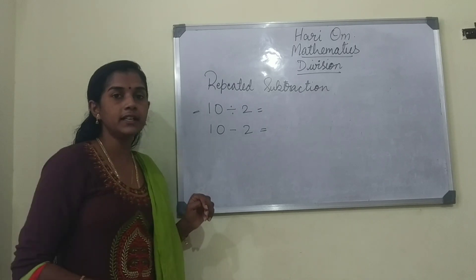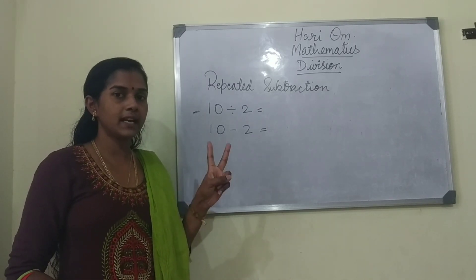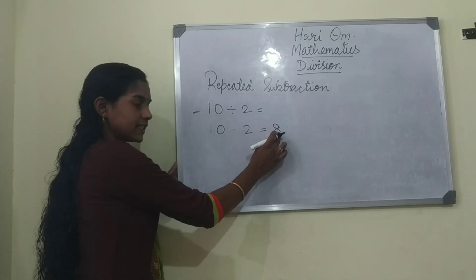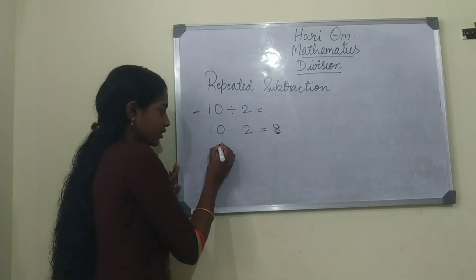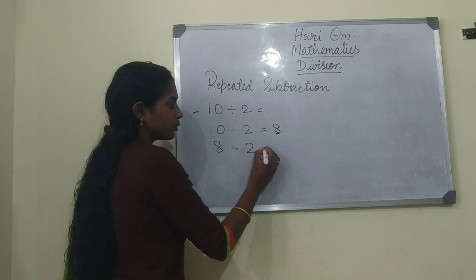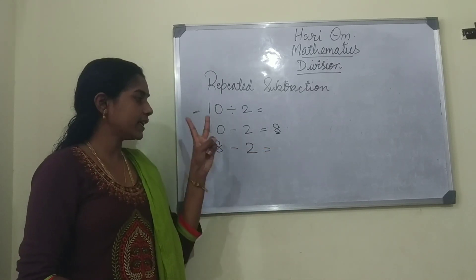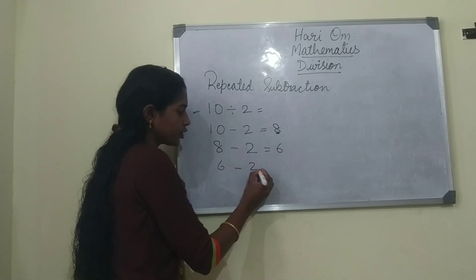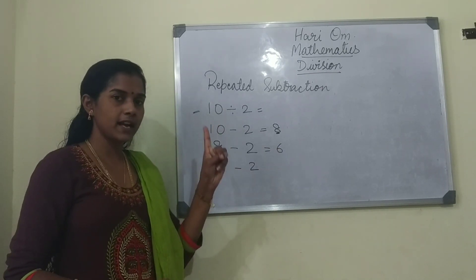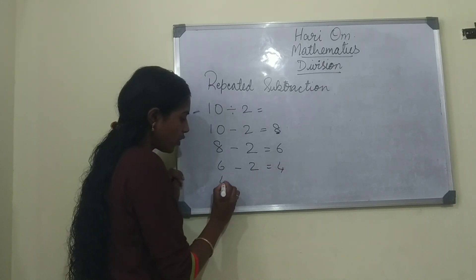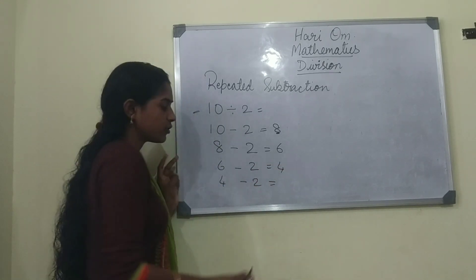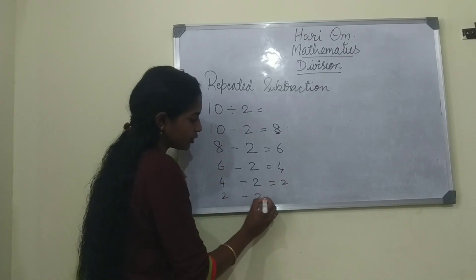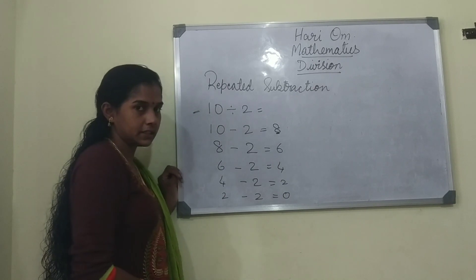What is 10 minus 2 children? Two numbers before 10 — 9, 8. So 8 minus 2. What is 8 minus 2? Before 8 — 7, 6. Then 6 minus 2. Before 6 — 5, 4. Then 4 minus 2. Before 4 — 3, 2. Then 2 minus 2 is equal to 0.